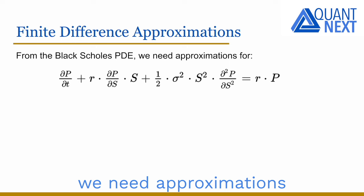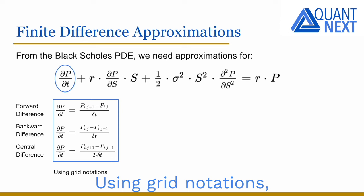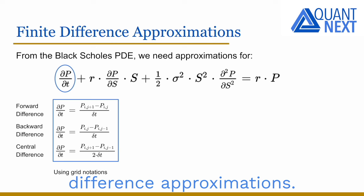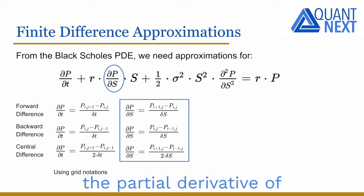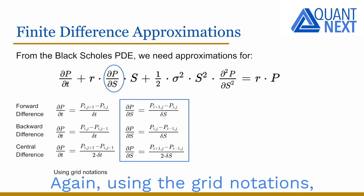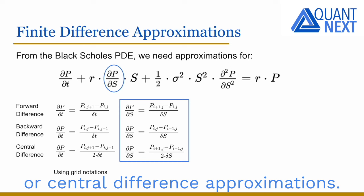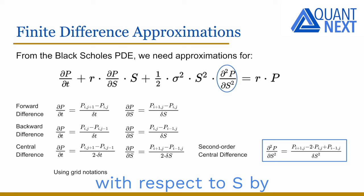From the Black-Scholes PDE, we need approximations for the partial derivative of the option price with respect to t. Using grid notations, we can apply forward, backward, or central difference approximations. We also need to approximate the partial derivative of the option price with respect to the stock price S — again using grid notations, we can apply forward, backward, or central difference approximations. We finally approximate the second derivative of the option price with respect to S by the second order central difference.